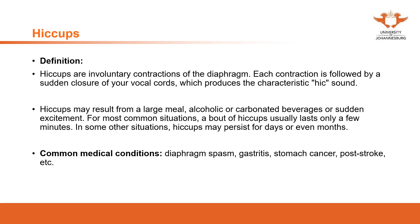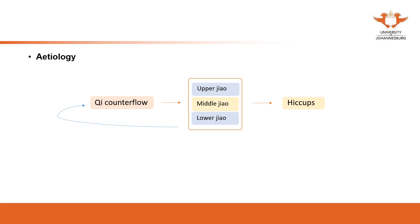Hiccups are the involuntary contraction of the diaphragm. The etiology is qi counter flow. From the symptom of hiccups, we see qi moving from the middle jiao, from the stomach, all the way up to the mouth. The qi is supposed to go downwards through the digestive system to the small and large intestine, but with hiccups it goes upwards — that is why we call it counter flow.